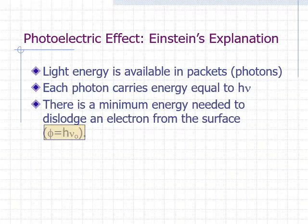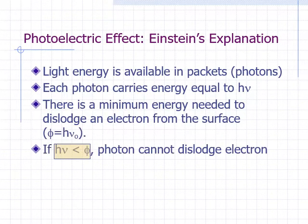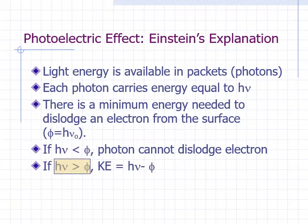Photons behave like particles colliding with electrons. When a photon collides with an electron and its energy happens to be less than φ, then it won't be able to dislodge the electron from the surface. However, if the photon energy is higher than φ, then an electron will be freed from the surface.